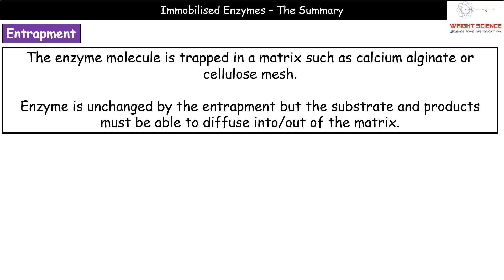Option three is the process of entrapment. As the name suggests, we're putting the enzyme inside a matrix — something like calcium alginate or cellulose mesh — and the enzyme is enclosed within that matrix. The big advantage is the enzyme is unchanged, so we don't see distortion of the active site. The downside is we need some method for the substrate and products to diffuse in or out of that matrix, so it wouldn't work with a substrate unable to cross the matrix.